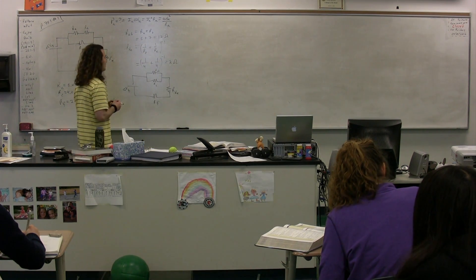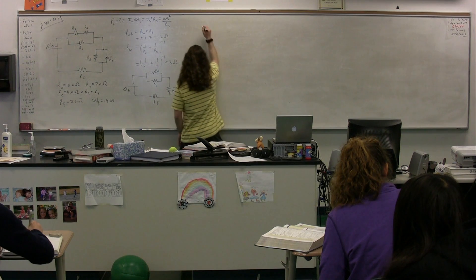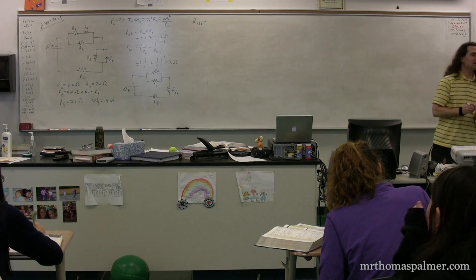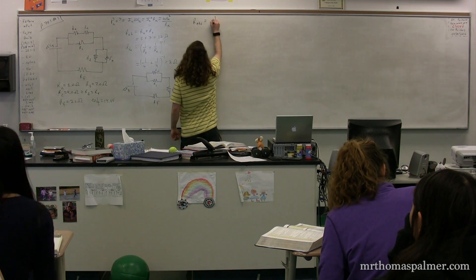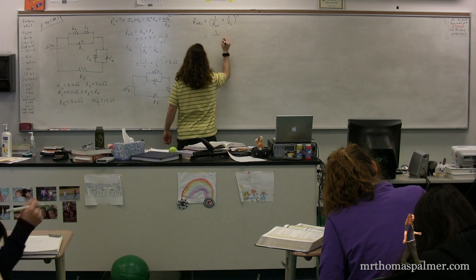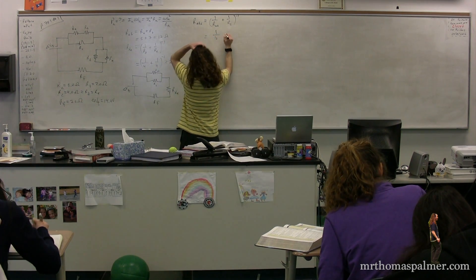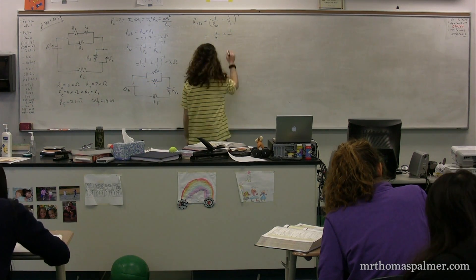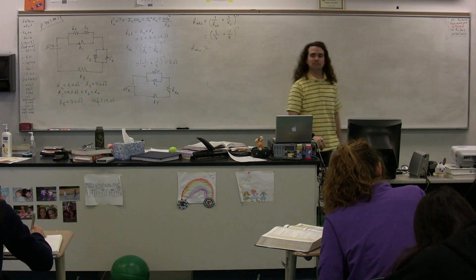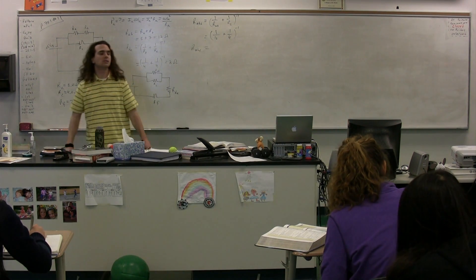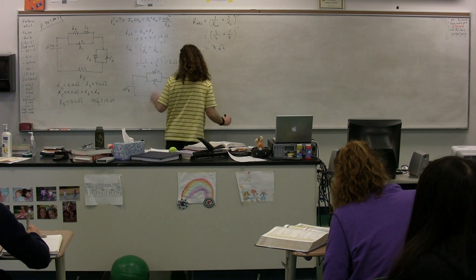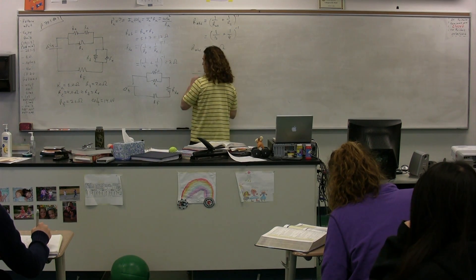We'll solve for resistance of ABC. We have an equivalent resistance ABC. The equation for equivalent resistance ABC: 1 over resistance AB plus 1 over resistance C, all to the negative 1 power — because they're in parallel. Equivalent resistance AB is 12 and resistor C is 4, so 1 over 12 plus 1 over 4 all raised to the negative 1 power gives us 3 ohms. So now we can replace equivalent resistors AB and resistor C with one resistor.